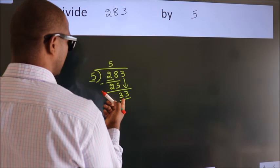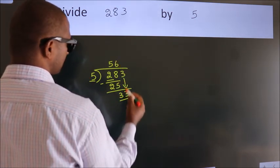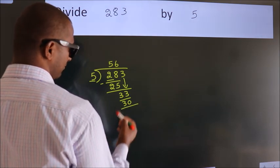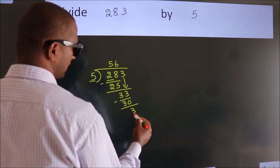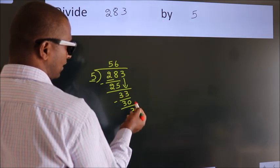A number close to 33 in 5 table is 5 6 30. Now, we subtract. We get 3. After this, no more numbers to bring it down.